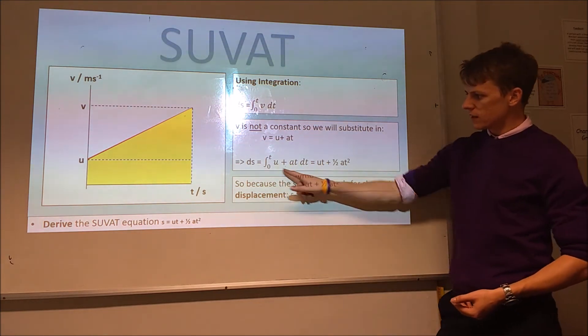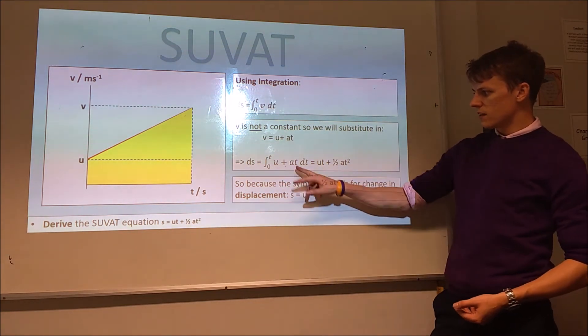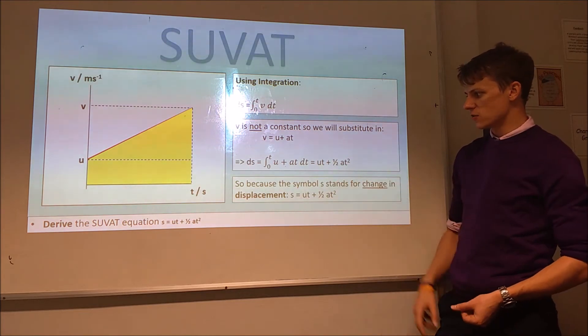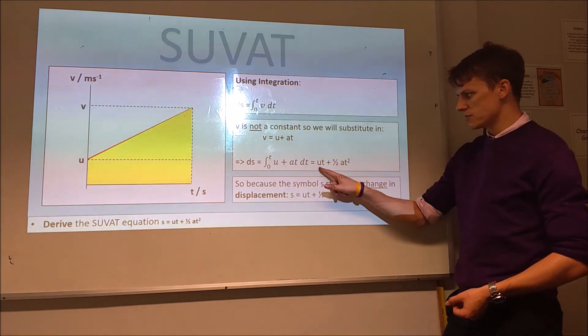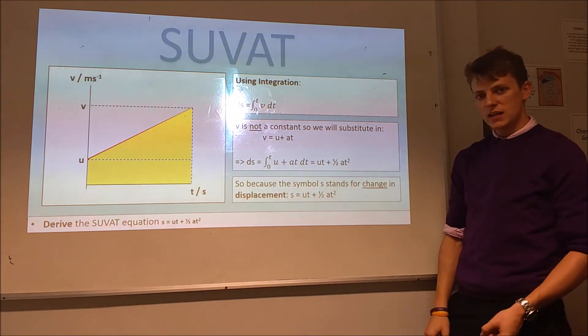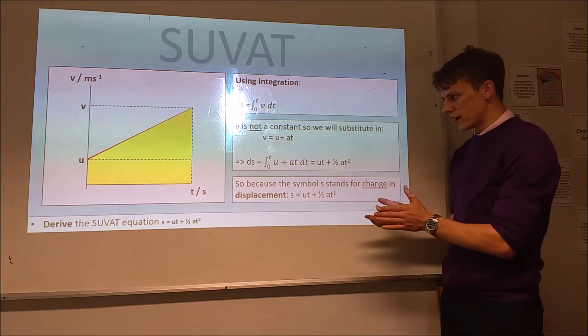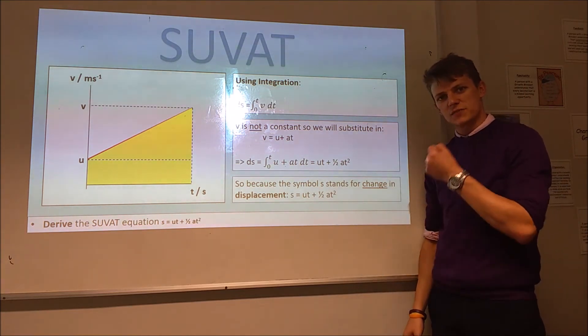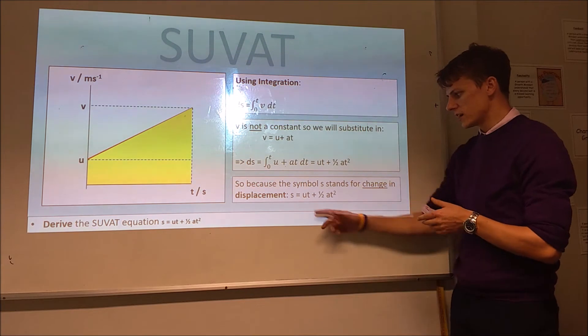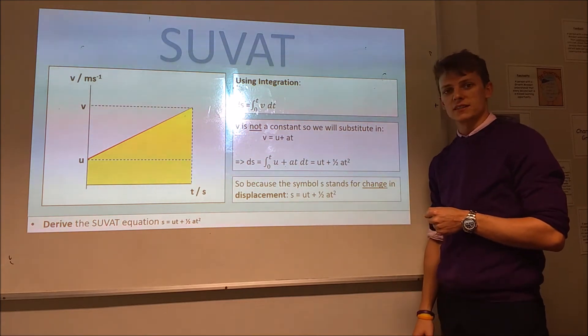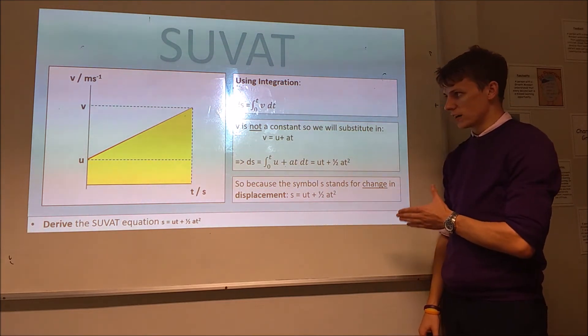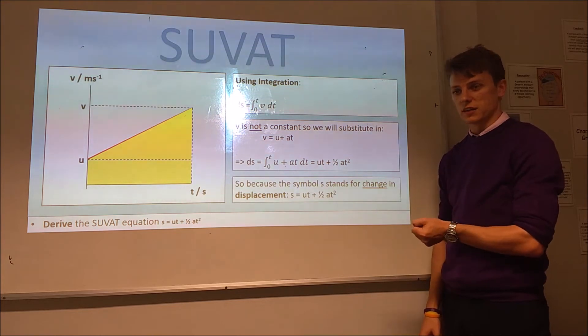So, if we actually do this, this becomes ut, and this becomes half at squared. So, the change in displacement is ut plus half at squared, and remember that when we're doing SUVAT equations, s stands for change in displacement, so we end up with s equals ut plus half at squared, which again, you should recognize from studying this topic.